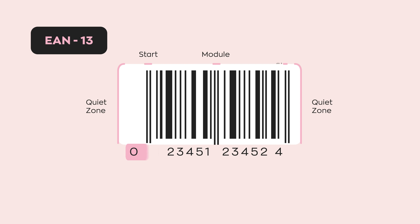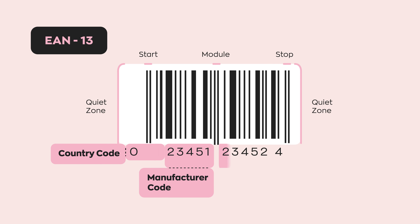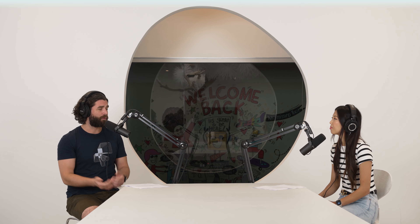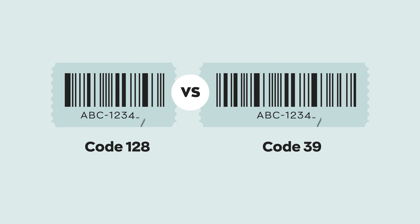EANs are used for products you're selling to consumers, suppliers, or similar. And then there are Code 128 and Code 39, which are more for internal use like logistics.